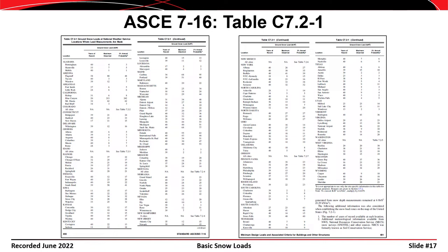For example, looking at Ohio — specifically the Dayton area with 40 years of records — the maximum observed snow load is 18 pounds per square foot, and the 2% probability of exceedance value is 11 pounds per square foot.